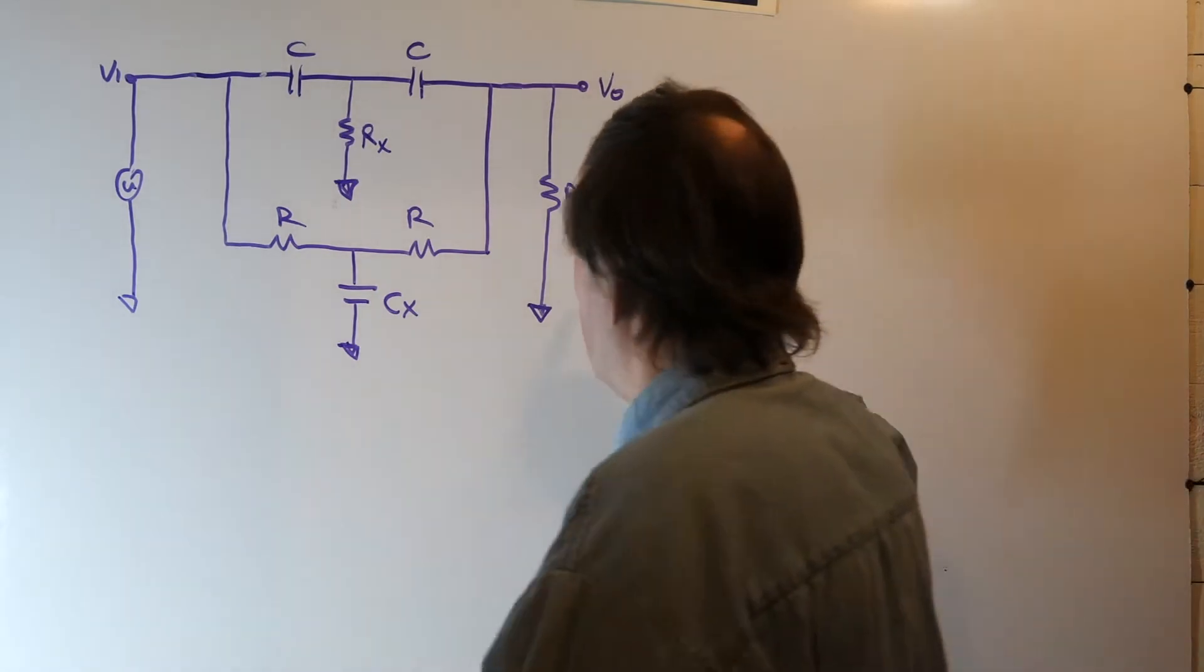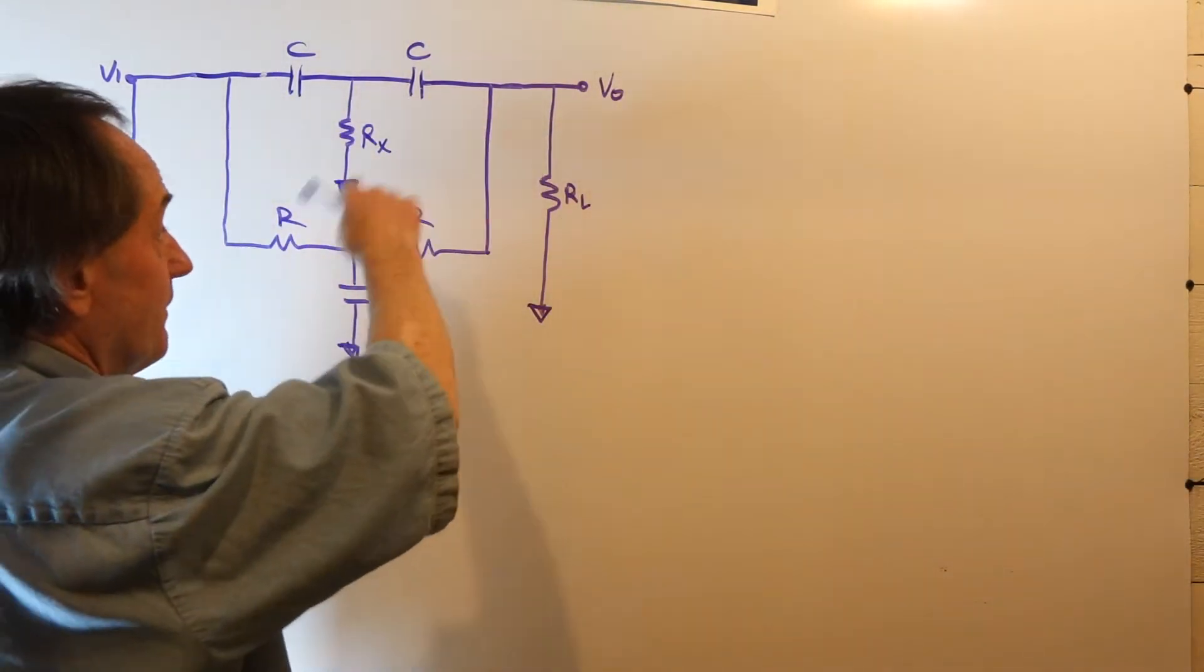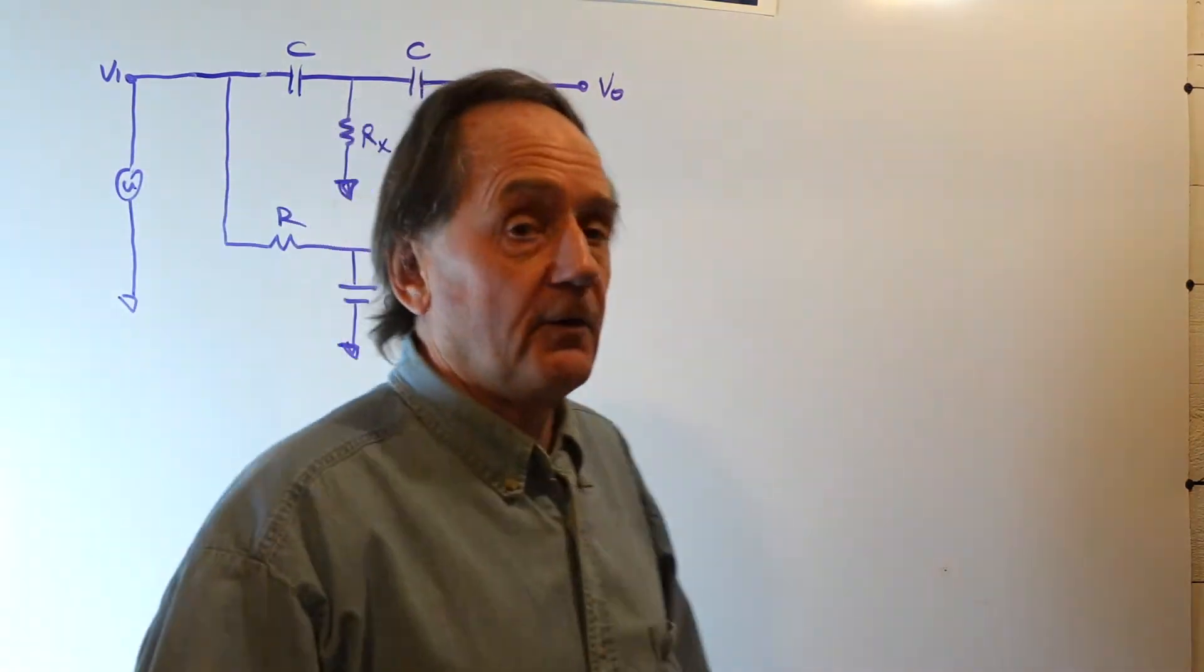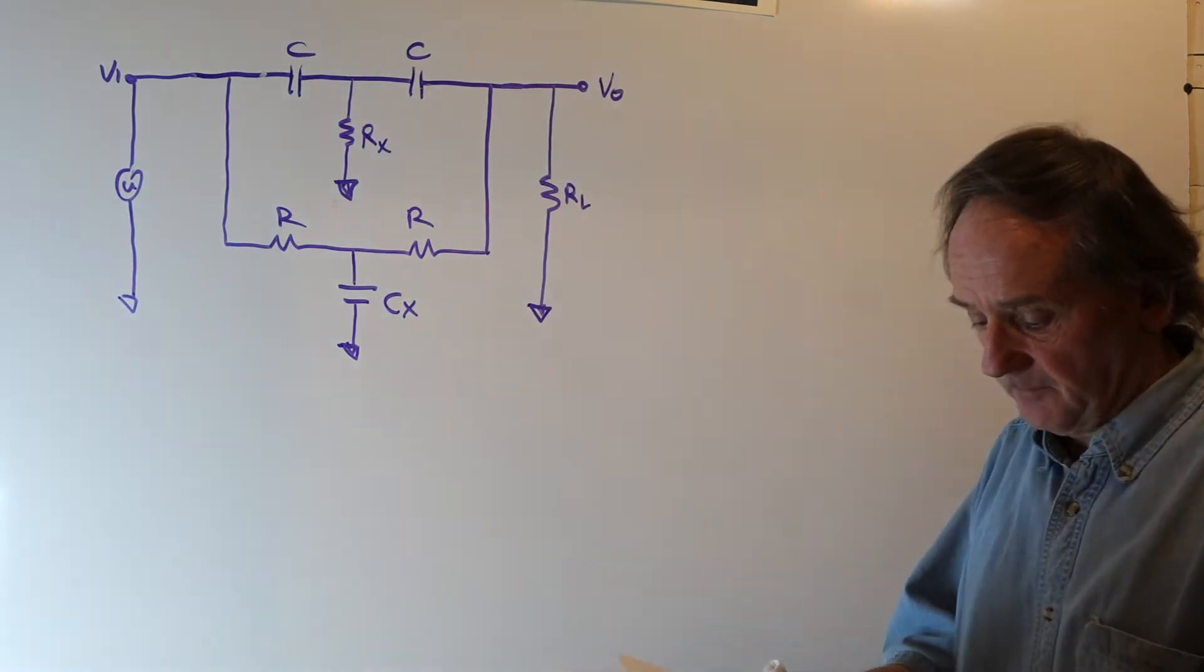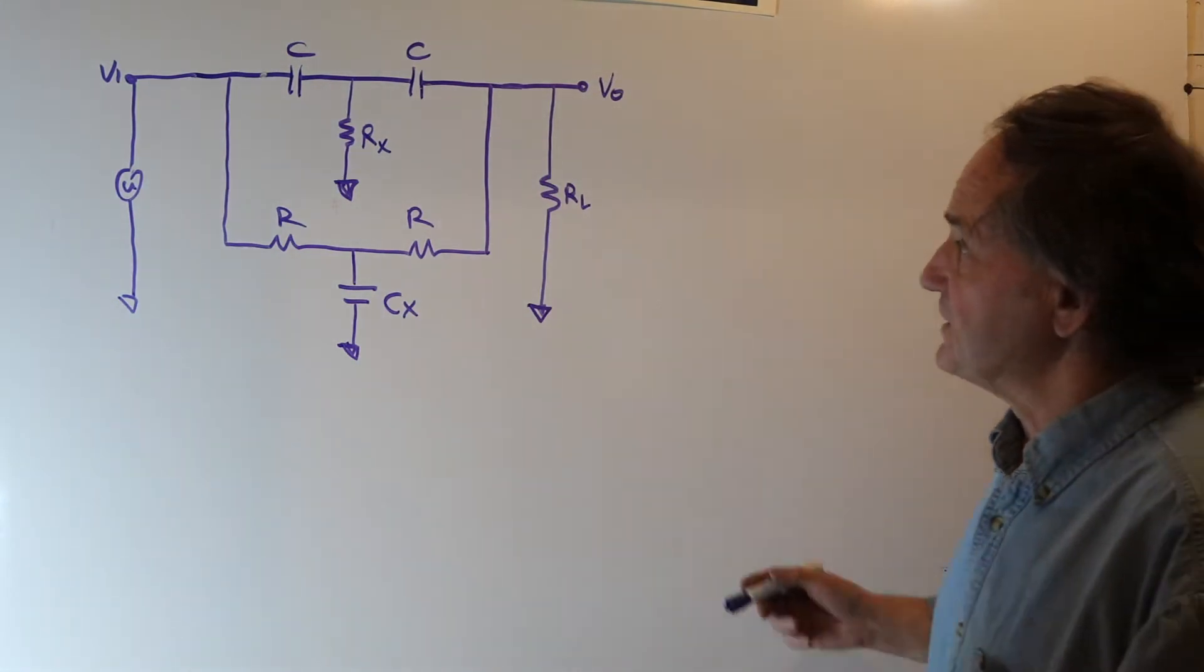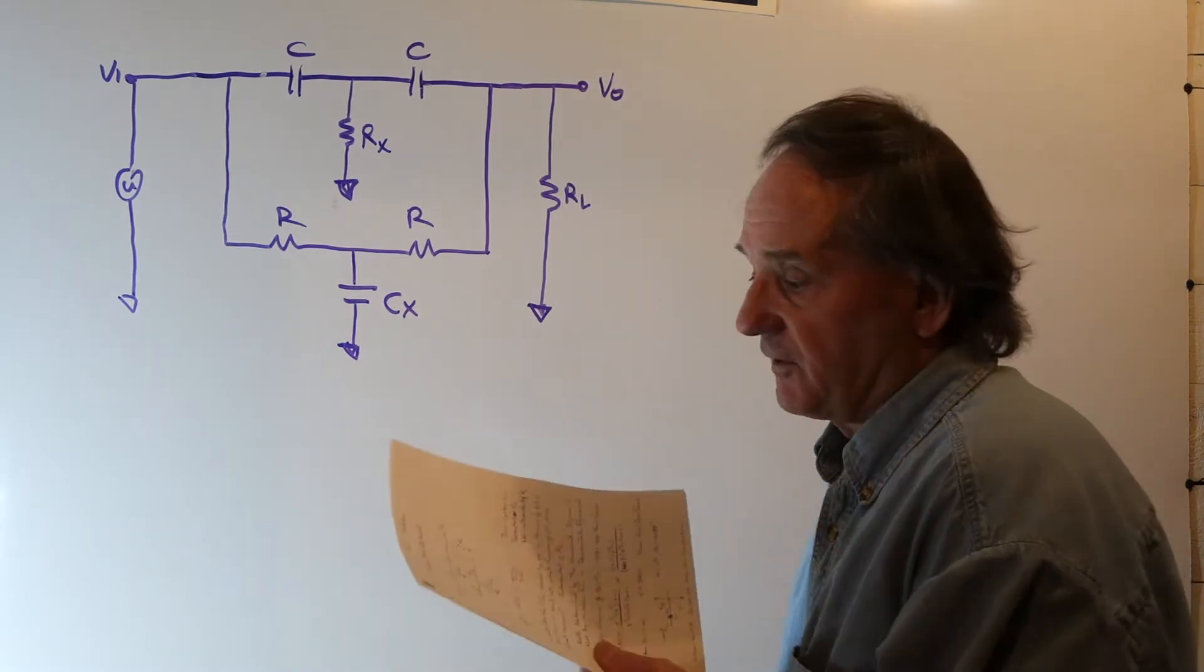Now it turns out it's independent of RL. So you can first assume it's much easier to solve when RL is infinity and the circuit isn't loaded. The null is determined by the numerator polynomial of the transfer function.